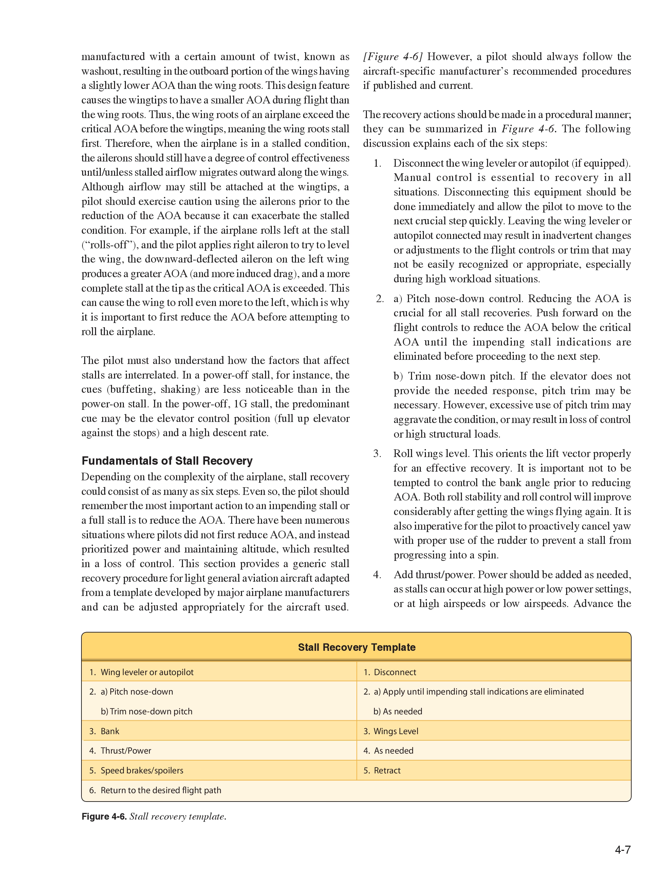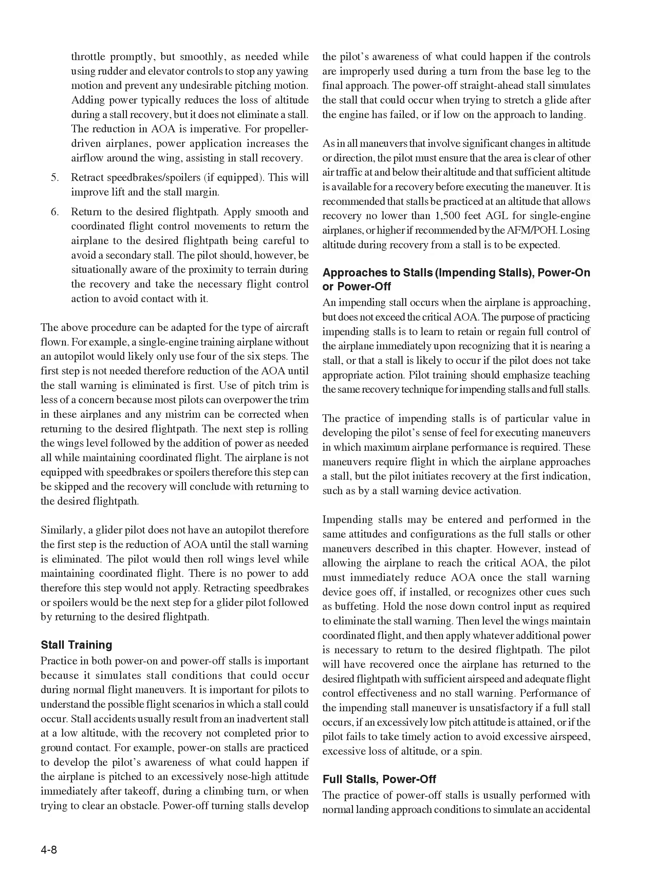4) Add thrust/power — power should be added as needed, as stalls can occur at high or low power settings and at high or low airspeeds. Advance the throttle promptly but smoothly, using rudder and elevator controls to stop any yawing motion and prevent undesirable pitching. Adding power reduces the loss of altitude during a stall recovery but does not eliminate a stall — reduction in AOA is imperative. For propeller-driven airplanes, power application increases the airflow around the wing, assisting in stall recovery. 5) Retract speed brakes/spoilers if equipped — this improves lift and the stall margin. 6) Return to the desired flight path — apply smooth and coordinated flight control movements, being careful to avoid a secondary stall, while remaining situationally aware of the proximity to terrain.